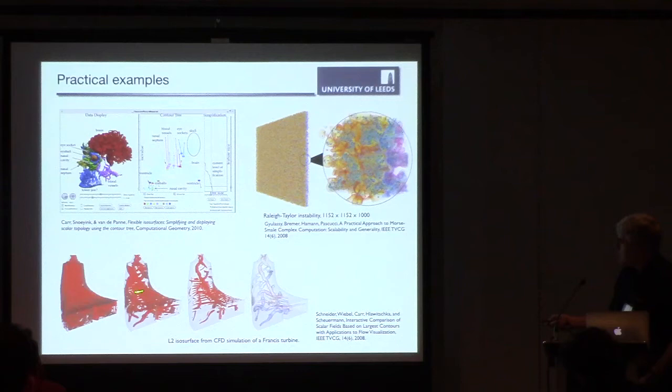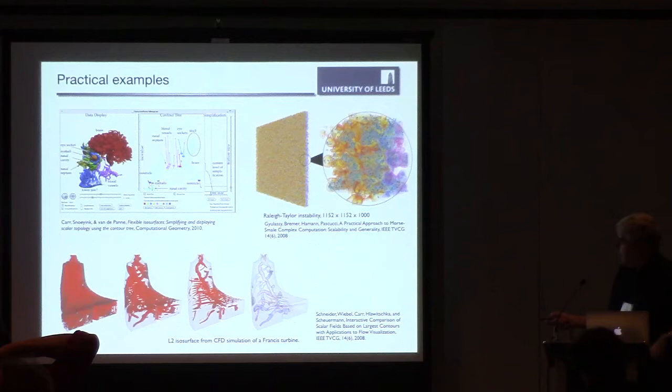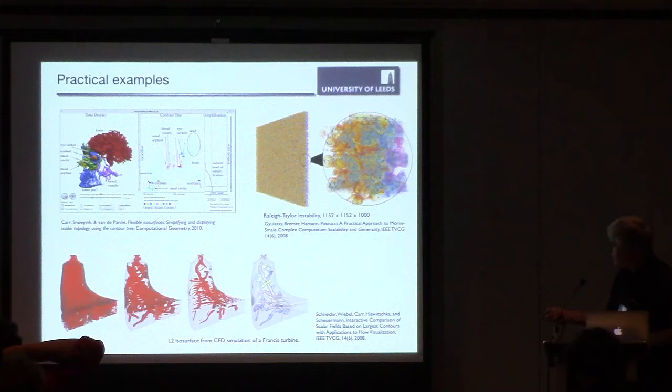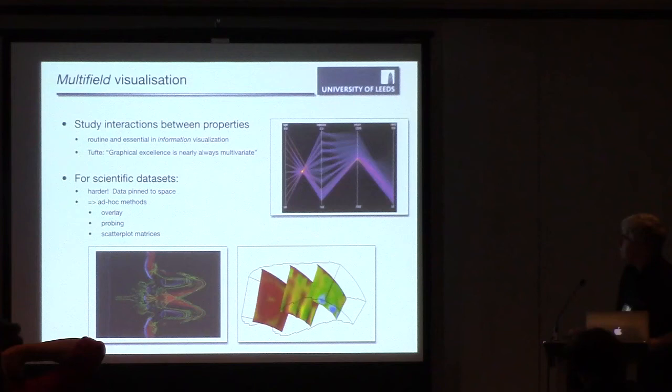This is a simulation of vorticity within a combustion flue. If you look at lambda 2, which is one of the properties of flow, and try and construct an isosurface, you end up with a mess. But by using the contour tree and then by doing simplification of the structures, by pruning bits of the tree which you know are uninteresting, you're able to expose the features that are actually significant in understanding the physical phenomena and the flow.